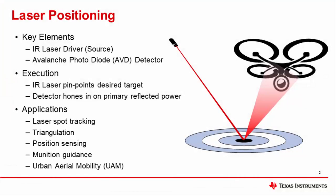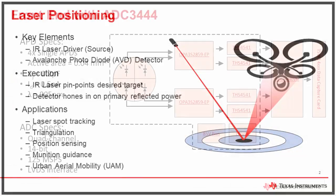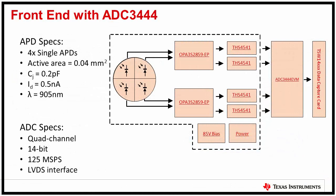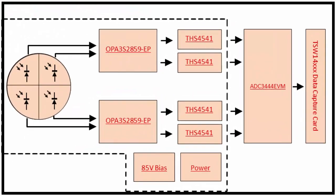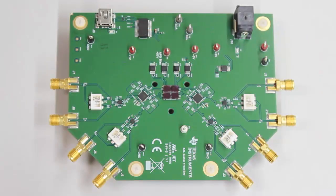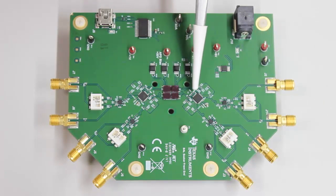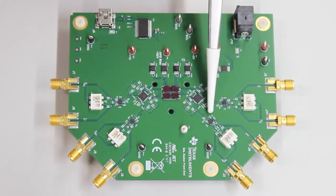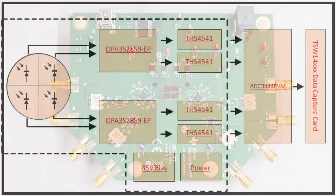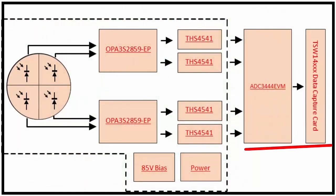Let's jump to a brief overview of this system. What we have set up here is a design representing how the OPA3S2859 transimpedance amplifier may be used in an infrared-based laser positioning application. This design includes four avalanche photodiodes, two dual-channel TIAs, and four fully differential amplifiers, allowing for testing with quad-channel data converters.